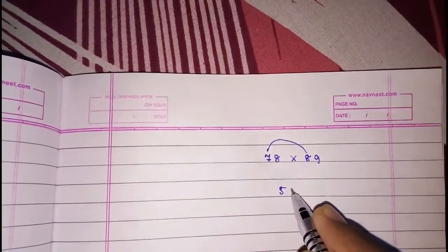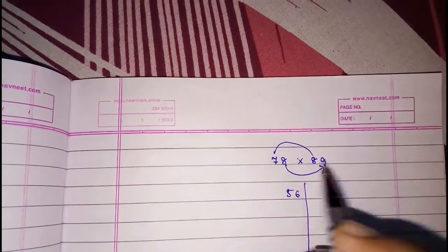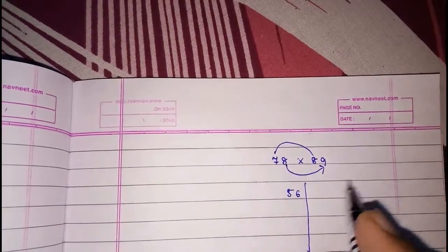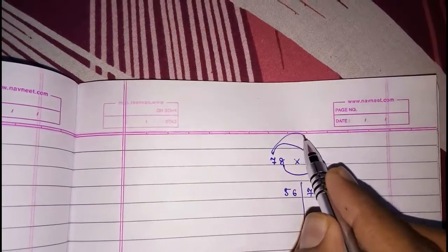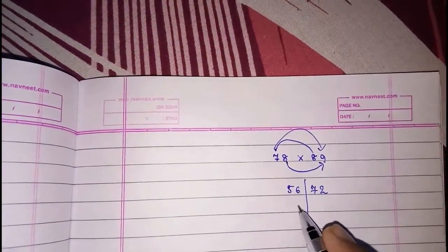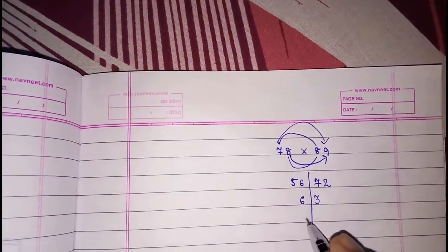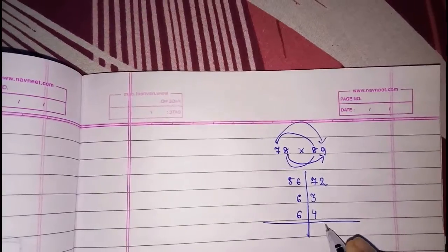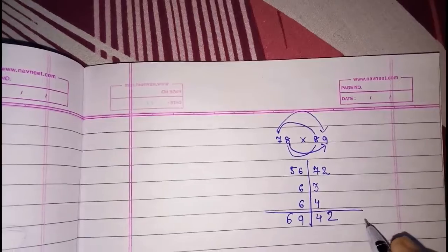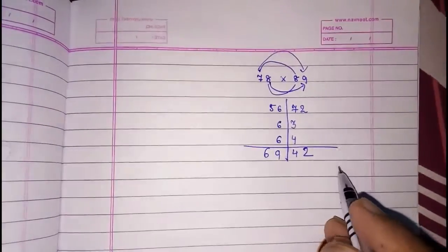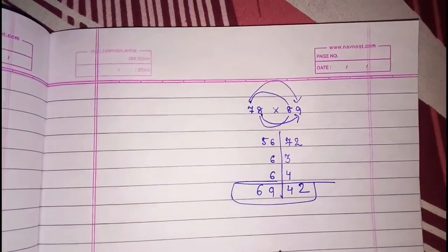Look here, now I am going to use big numbers so that you can understand. First we have to multiply left-hand side numbers: 78 into 89. 7 into 8, 56. Then right-hand side numbers: 8 into 9, 72. Then left and right: 7 into 9, 63, and then 8 into 8, 64. Now we have to add: 2, 4 carry 1, 9, 8, 1, 6. So this way we can multiply any number easily, and these tricks are very useful.